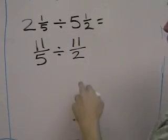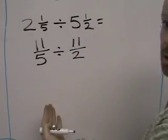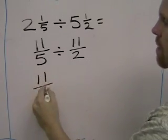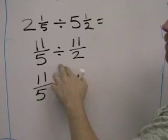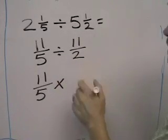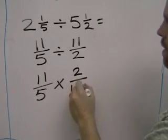Your second step is to multiply by the reciprocal of the second fraction. So the first fraction stays the same, that's 11 fifths. But now over here, the division becomes multiplication. 11 halves turns into 2 elevenths.